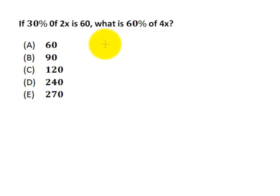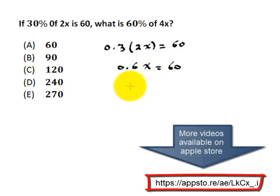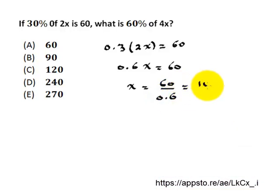If we solve it in one way, how does it go, and if we solve it in another way, how does it go? If 30% of 2x — 30% means 0.3 — of 2x is equal to 60, then 0.3 times 2x, which is 0.6x, equals 60, so x equals 60 divided by 0.6, which is 100. But did we finish? Sometimes they give you the answer as 100 to trick you, but you have to read the question carefully and look at what the question asks.